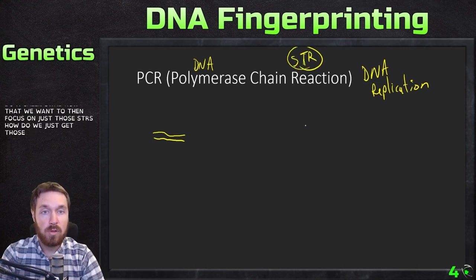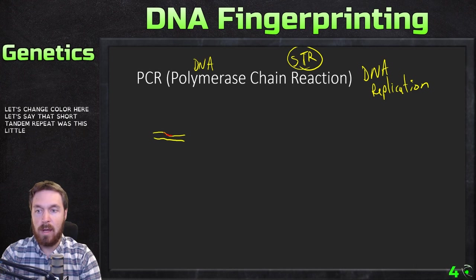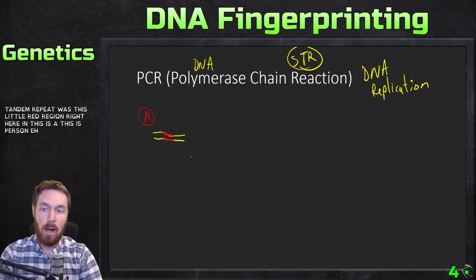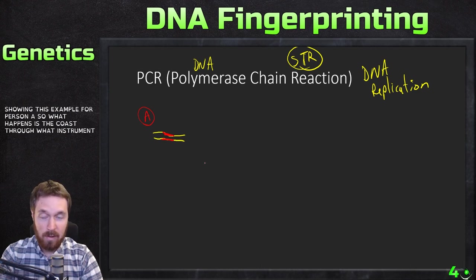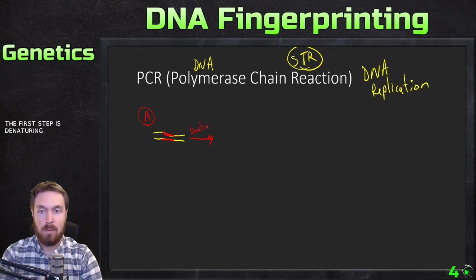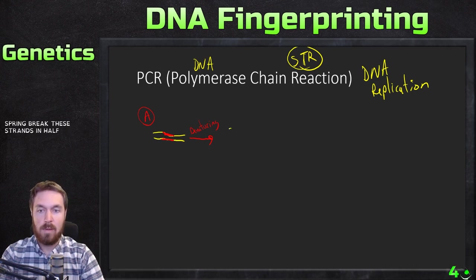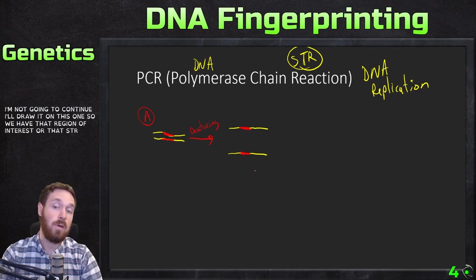To isolate those short tandem repeats, we can label for them. Let's say the short tandem repeat is this red region right here for person A. The DNA goes through an instrument called a thermocycler. The first step is denaturing — denaturing breaks the DNA strands apart, separating those two strands. Now we still have the region of interest, that STR with a certain number of repeats, exposed.